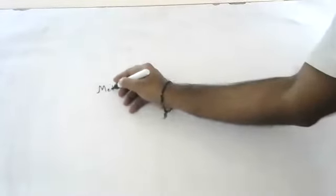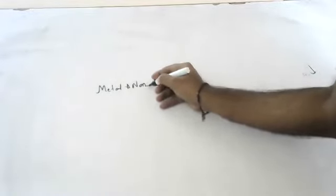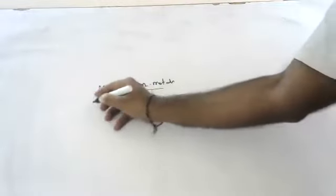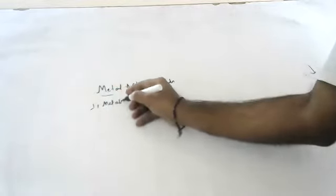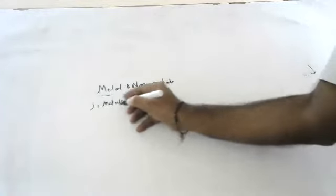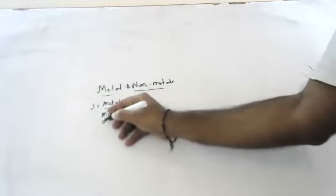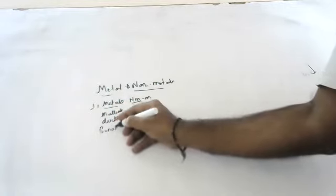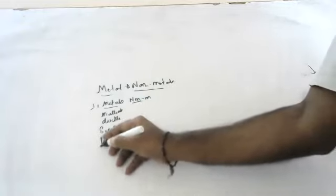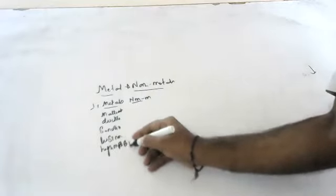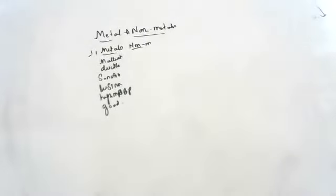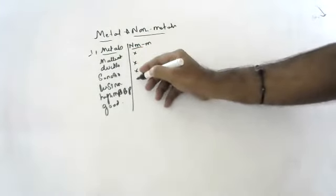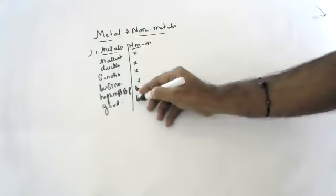We'll do some important questions in metals and non-metals. First question: list five properties of metals and compare them with non-metals. Metals are hard, sonorous, lustrous, have high melting point and high boiling point, and are malleable. Non-metals are non-malleable, non-ductile, non-lustrous, have low melting and boiling points, and are bad conductors of heat and electricity.